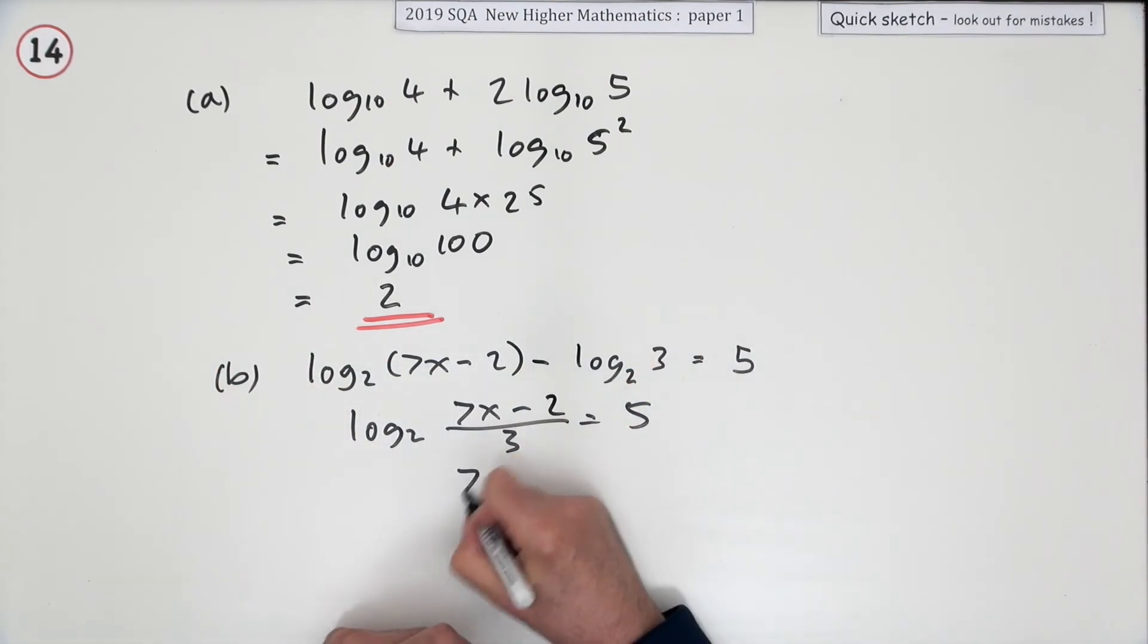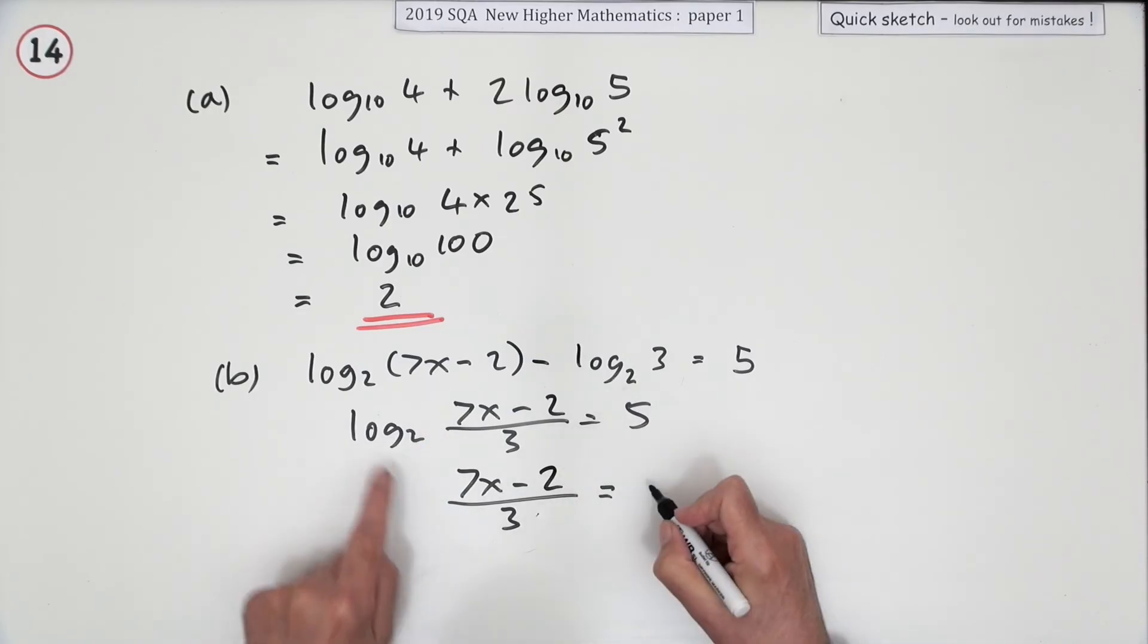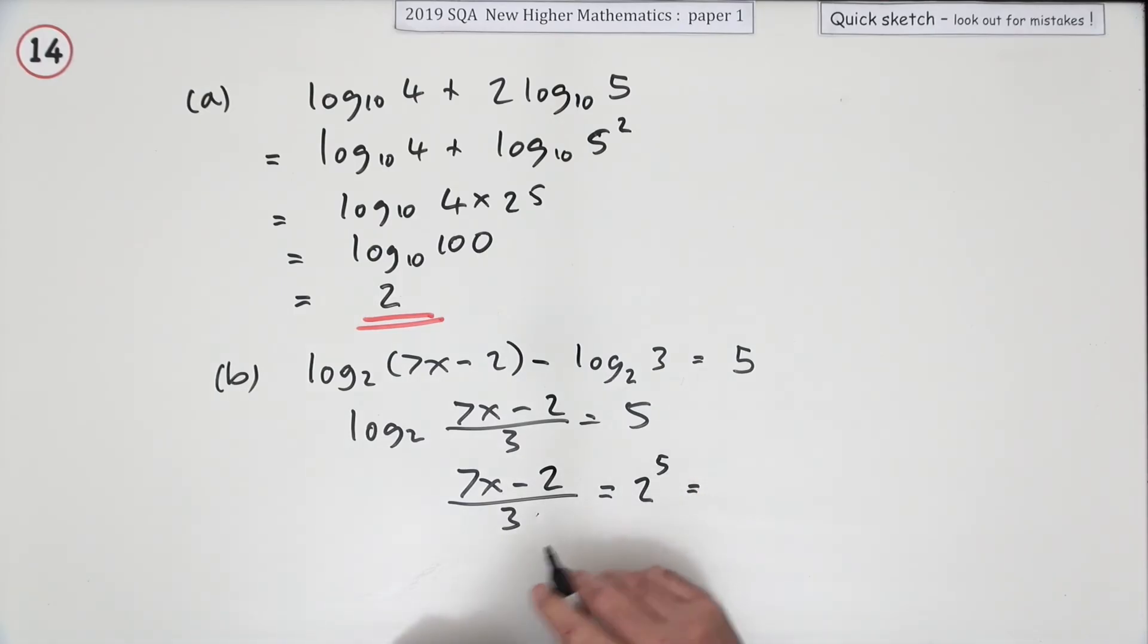I'm just going to apply the inverse because I'm only going to look through this using one method. So if log base 2 acts on that to produce 5, then that must equal the inverse of log base 2, which is 2 to the power 5. And 2 to the power 5, you can always use your finger calculator for powers of 2: 2, 4, 8, 16, 32.